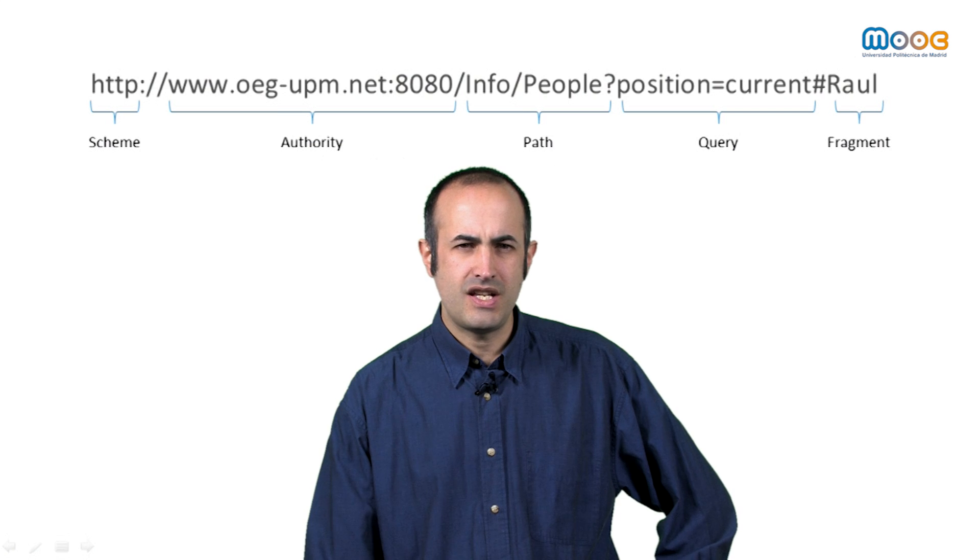In this video, we are going to discuss the different alternatives in order to name our resources using URIs. Even if in the video I will talk about URIs, all the comments can be applied to IRIs, that is Internationalized Resource Identifiers, whose main difference is that IRIs can contain Unicode characters. This is a URI.